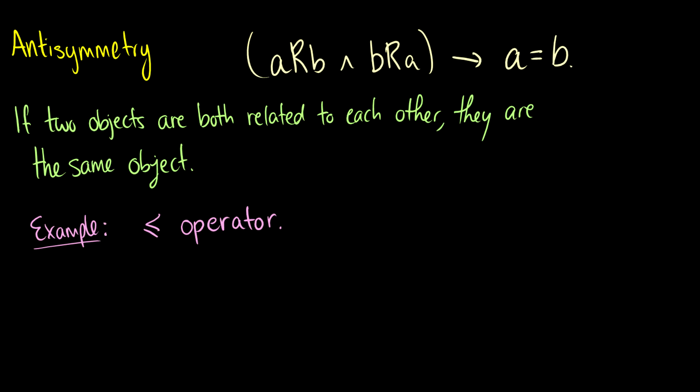So we need to introduce a new type of relation, and that is anti-symmetry. Now when you see the word anti, you sort of think of the word not. We should not do that with anti-symmetry, because the definition is a little bit more nuanced. What this says is that if a is related to b and b is related to a, then a is going to be equal to b. So if two objects are related to each other, they're going to be the same object in an anti-symmetric relation.